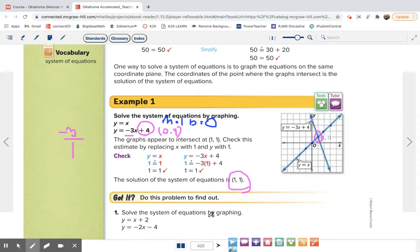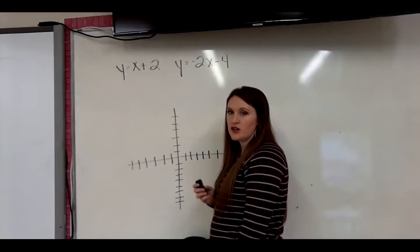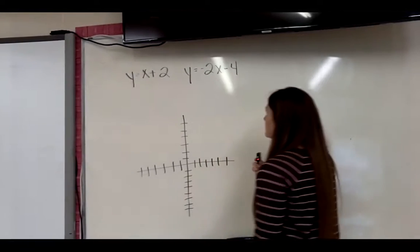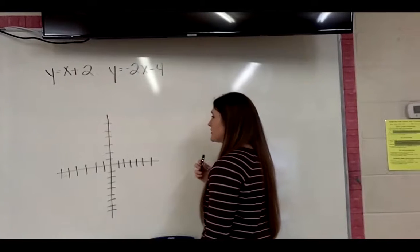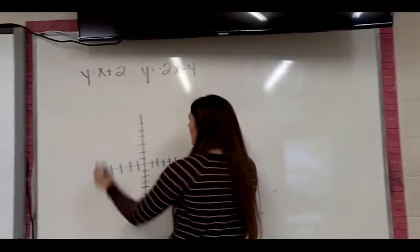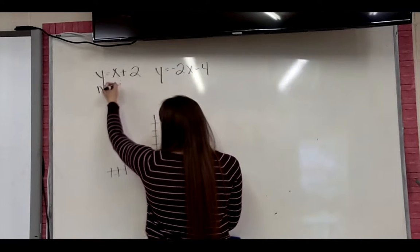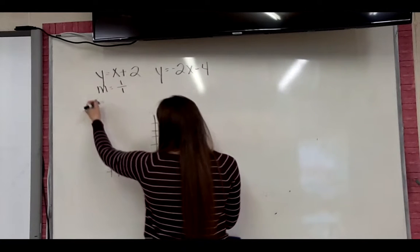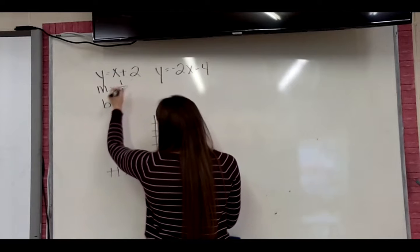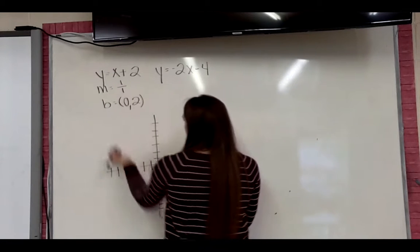I want you to try this one: solve the system of equations by graphing. You should have them graphed in your notes; on the computer, just tell me your solution as a point. We're solving y equals x plus 2 and y equals negative 2x minus 4. First, look at slope and y-intercept. On the first equation, the slope is 1 over 1, and the y-intercept is 2.